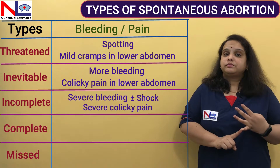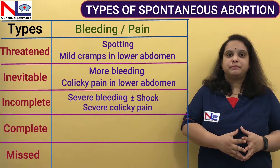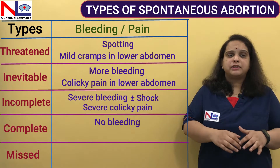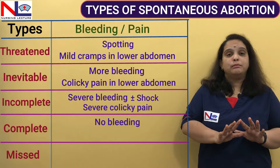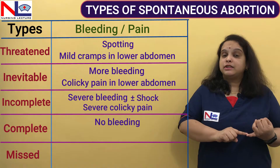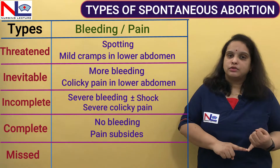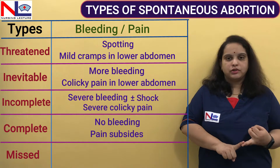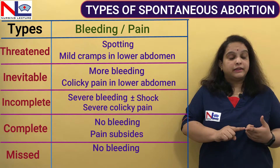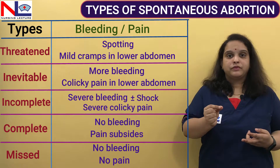In complete abortion, the woman may report she had massive bleeding or expelled the whole product of conceptus, but at present — when she comes for clinical examination — there is no bleeding, as all products of conceptus have been expelled. There is also no pain because nothing is left inside to expel. In missed abortion, there is again no bleeding and no pain, but sometimes there may be a brownish vaginal discharge.